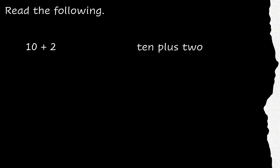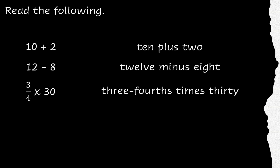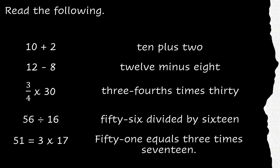This time, I want you to read the following as simple as possible. Did you say 10 plus 2? How about this one? I'm sure you said 12 minus 8. Let's have another one. If you said 3 fourths times 30, then you are correct. Try reading this. 56 divided by 16 would be the most common way of reading this. Do you think you can read the following correctly? This one is already a sentence. It is read as 51 equals 3 times 17.